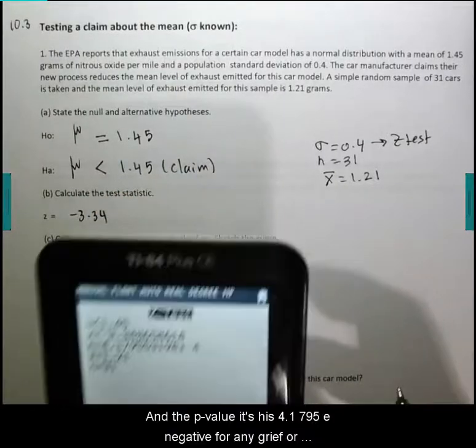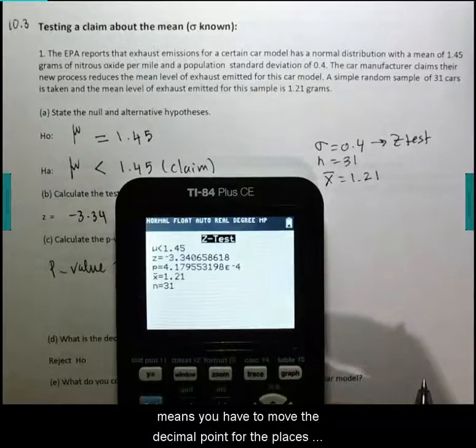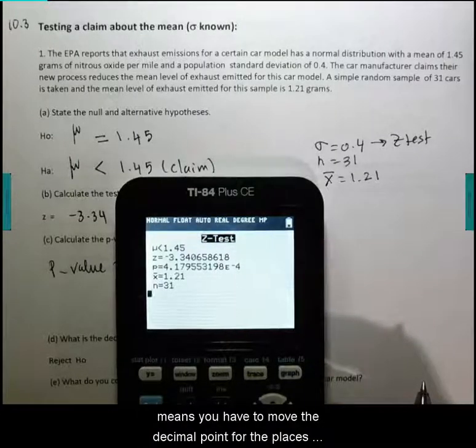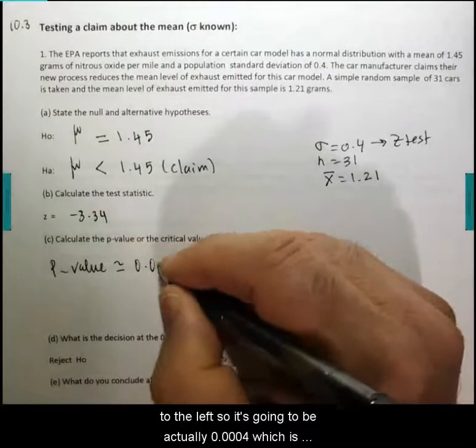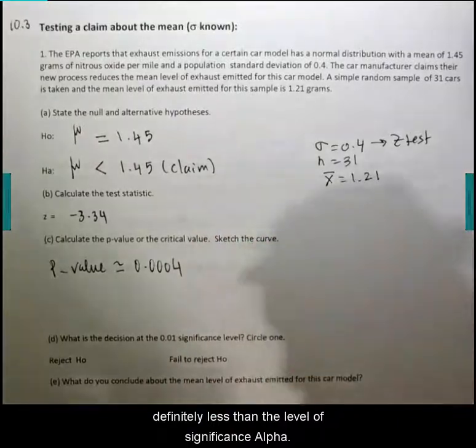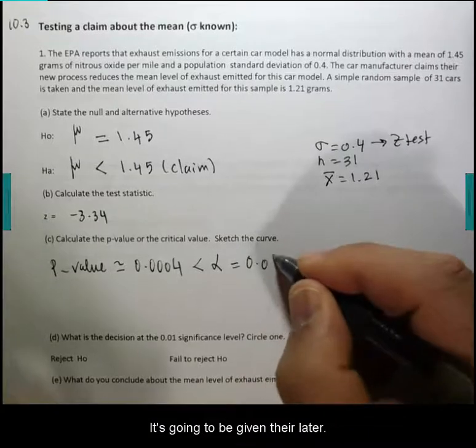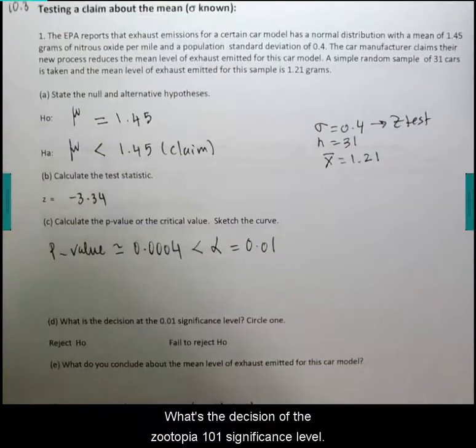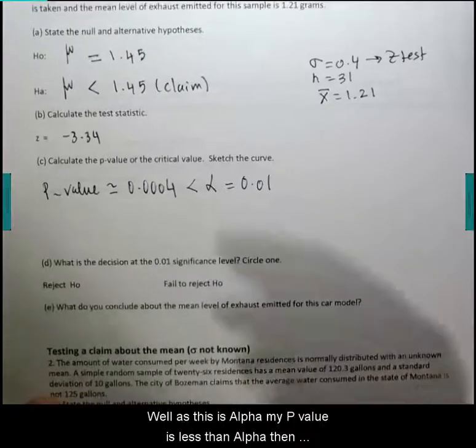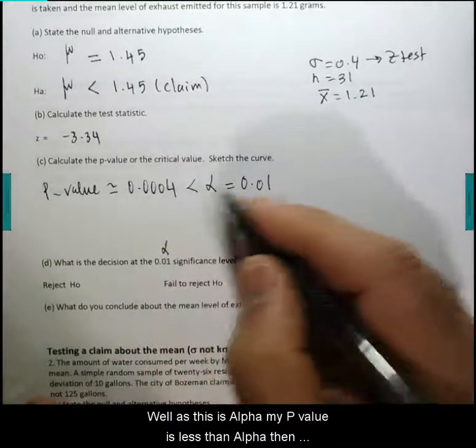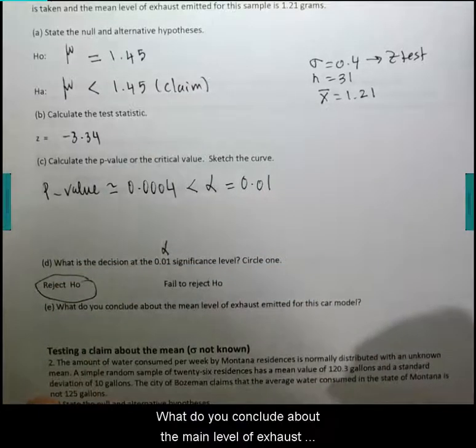The p-value says 4.1795 e negative 4. E negative 4 means you have to move the decimal point four places to the left, so it's actually 0.0004, which is definitely less than the level of significance alpha that is going to be given later. What's the decision at the 0.01 significance level? Well, this is alpha. My p-value is less than alpha, then you reject H0.